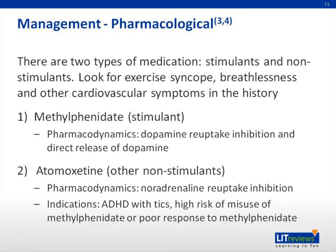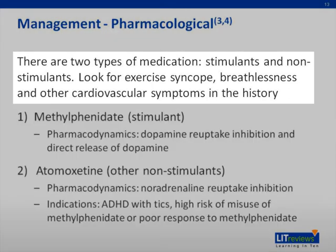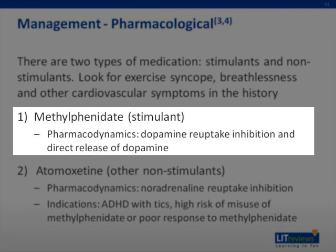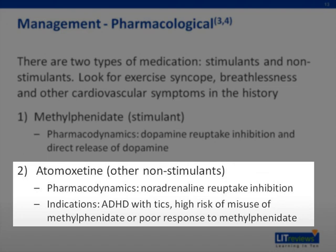In terms of pharmacological management, there are two main kinds of medication: stimulants and non-stimulants. Before commencement of stimulants or non-stimulants, we have to look for exercise syncope, breathlessness, and other cardiovascular symptoms in the history. The first stimulant we will talk about is methylphenidate — its pharmacodynamics involves dopamine reuptake inhibition and direct release of dopamine. The non-stimulant is atomoxetine, whose pharmacodynamics involves noradrenaline reuptake inhibition. An indication for atomoxetine is for children with ADHD with tics and those with a high risk of misuse of methylphenidate or poor response to methylphenidate.